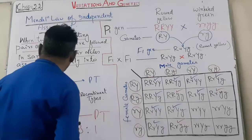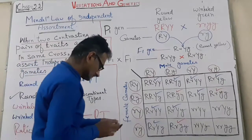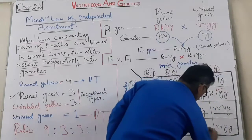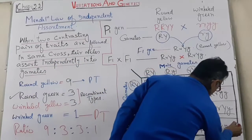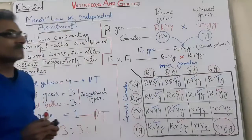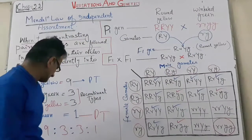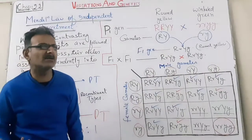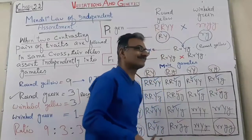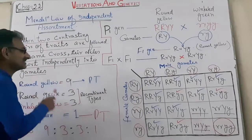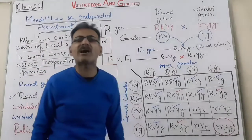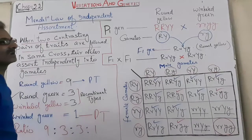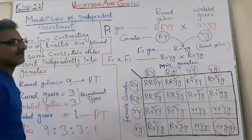We find round green — three combinations, then wrinkled yellow — three combinations, and only one plant which is wrinkled green. When Mendel counted the total plants: round yellow seeded plants were 315, round green were 108, wrinkled yellow were 101, and wrinkled green were 32.